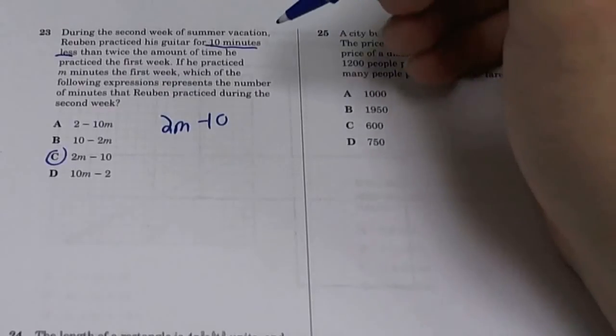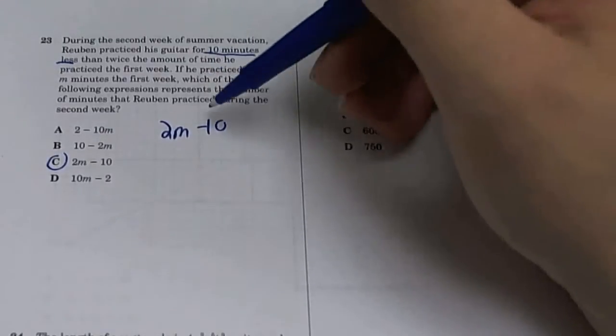Pretty easy. Just got to read the words and figure out what they're asking us. So 10 minutes less than the time amount he practiced last week. Last week he practiced N. Twice of N is 2N. And 10 minutes less is 2N minus 10.